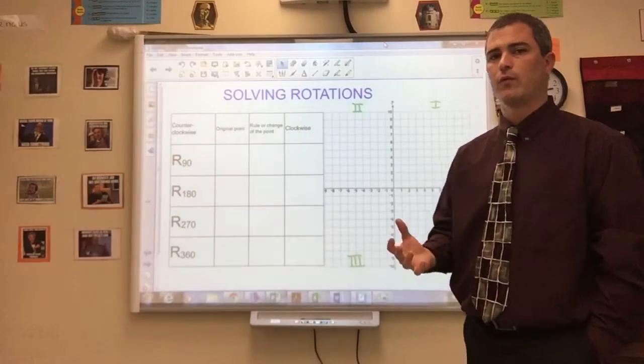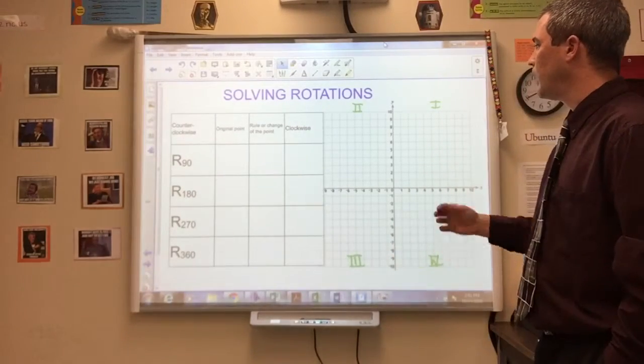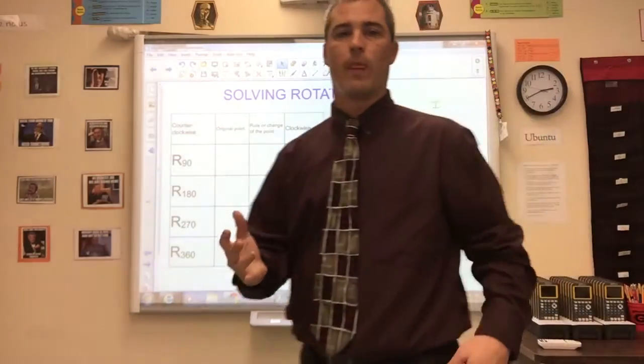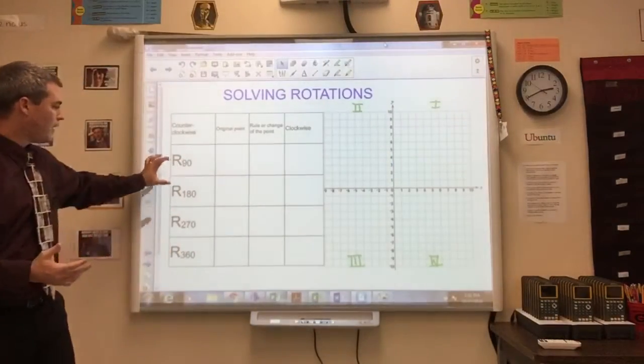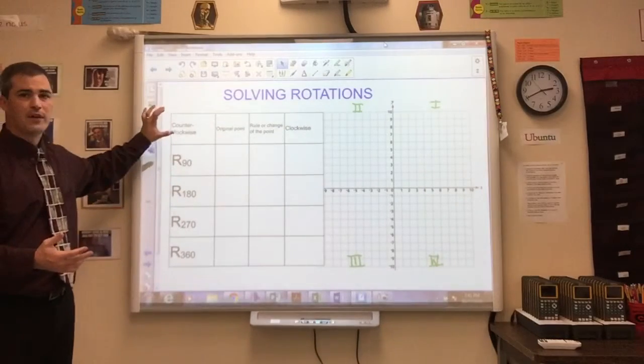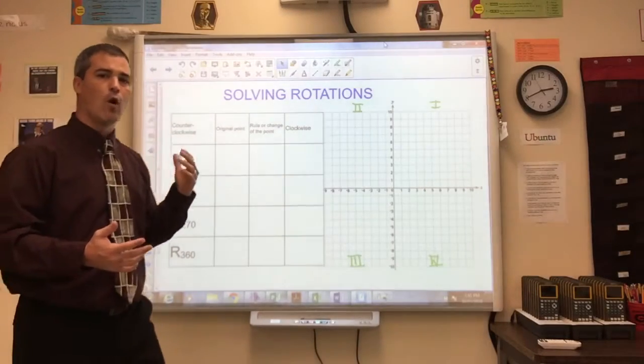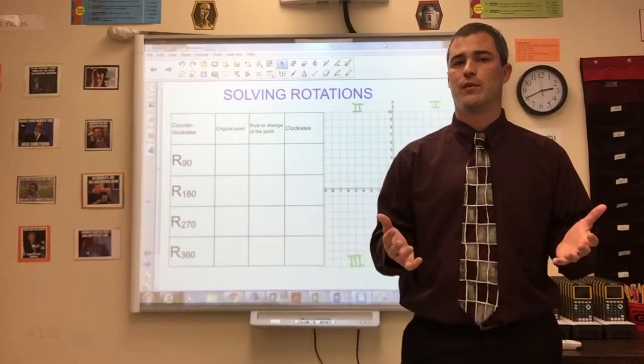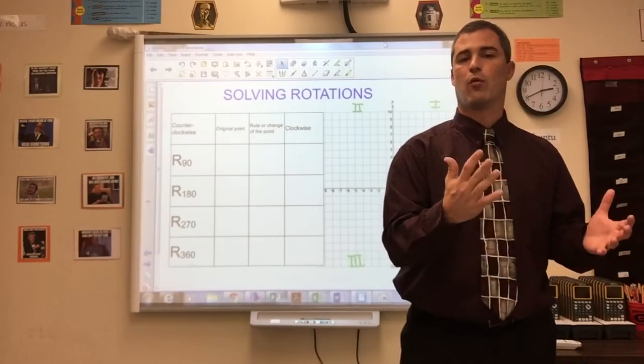When you solve with rotations, quadrants one, two, three, and four are labeled this way because we rotate 90, 180, 270, 360 counterclockwise. We always rotate counterclockwise unless we're specifically told to rotate clockwise.